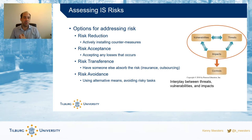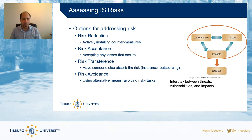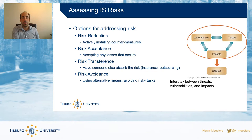To deal with those impacts, you can put controls in place. You can reduce the risk — actively reducing vulnerabilities, installing countermeasures. You can accept the risk, saying we can't secure against that, but we're okay with accepting it. You can transfer the risk, having somebody else absorb it — think about insurance. With your car, the vulnerability is your car, the threat is somebody else drives poorly, and together they create a car accident. The impact is paying for repairs and damage. Instead of taking that risk, you transfer it to the insurance company — that's risk transference.